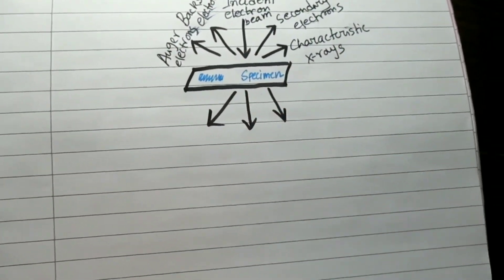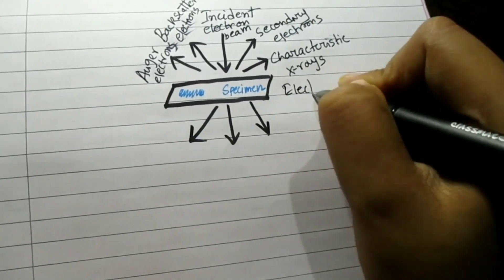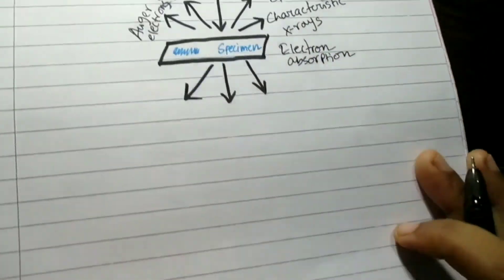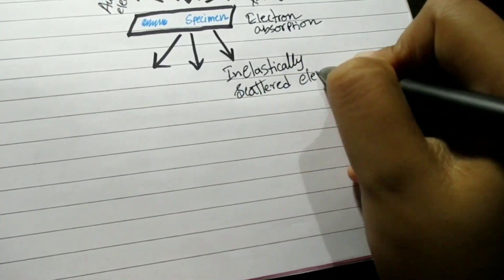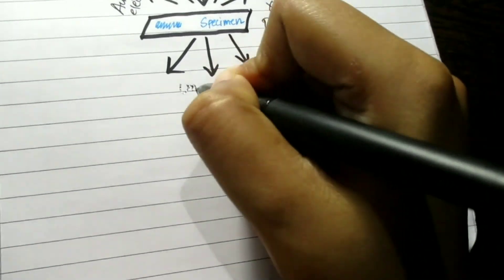When the electrons come in contact with the sample, they can either be scattered elastically, that is without any loss of energy, or inelastically, that is transferring some of that energy to the atom.